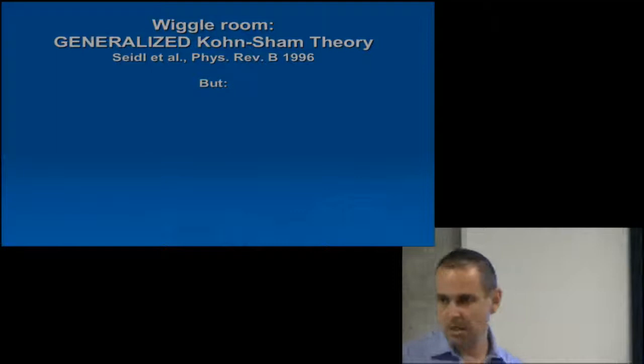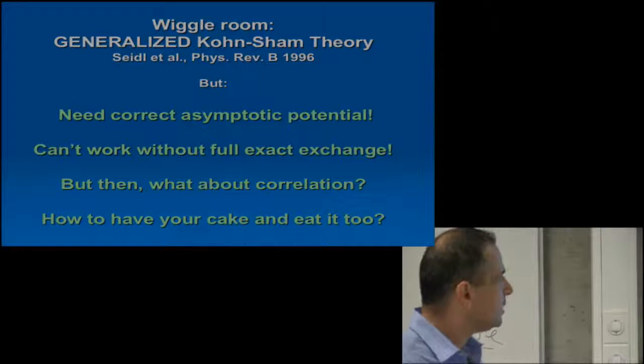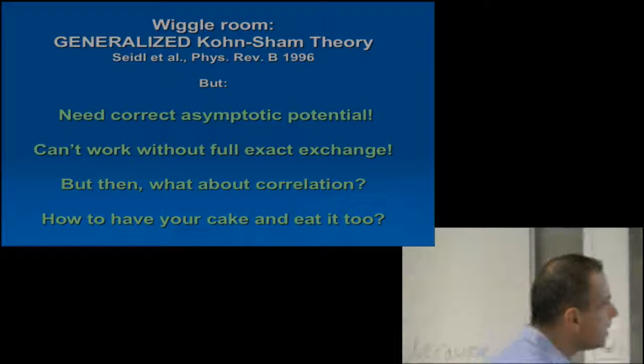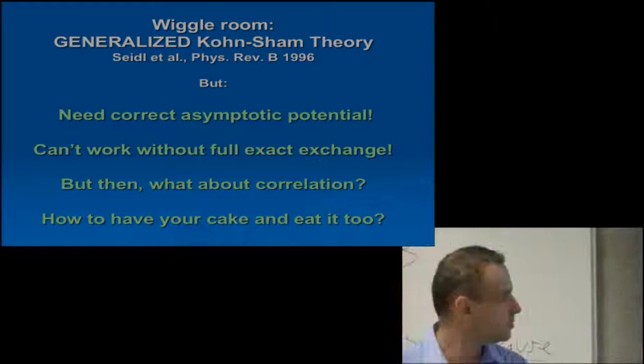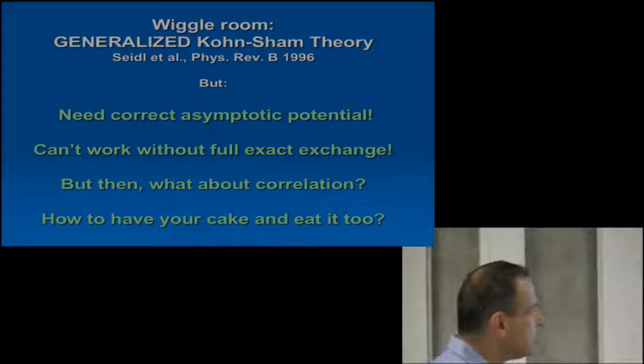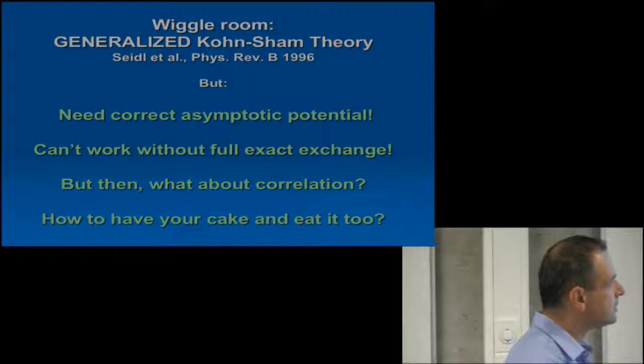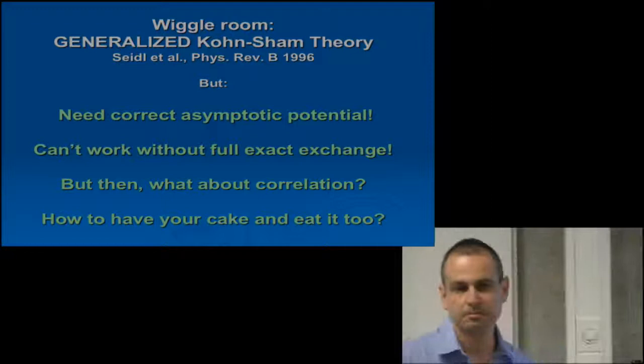So why is that? One has to choose wisely which generalized Kohn-Sham theory one would use. We believe that the problem is that if you're trying to describe how an electron goes out into infinity or comes back in from infinity, you better have the correct asymptotic potential, which none of these functionals have because to have the correct asymptotic potential, you would need a hundred percent of Fock exchange or full exact exchange.